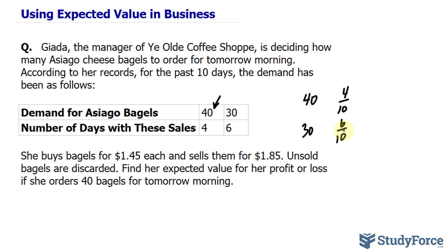She buys bagels for $1.45 each and sells them for $1.85. Unsold bagels are discarded, so that's a loss. Find her expected value for her profit or loss if she orders 40 bagels for tomorrow morning.